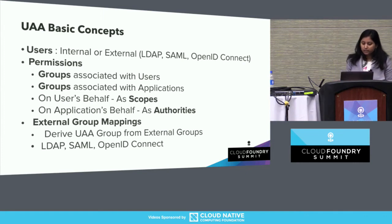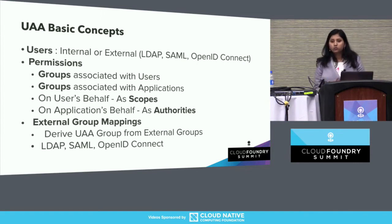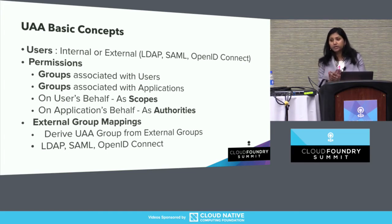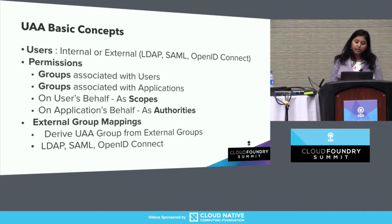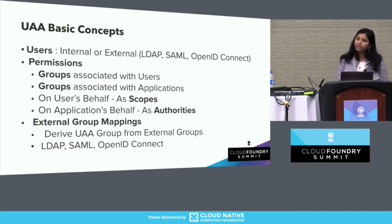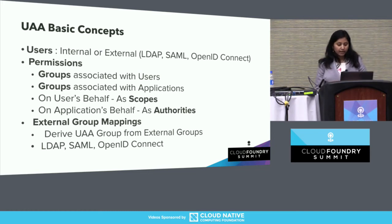In any organization, access is driven through groups. Users get access to applications based on the groups they are in — that's a very typical way of performing access management in an enterprise. UAA supports this model where UAA groups can be derived or mapped to external groups, giving you another layer for defining application-specific roles or permissions. UAA can also connect to LDAP, SAML, or OpenID Connect-based providers.